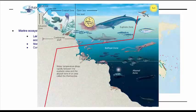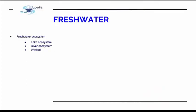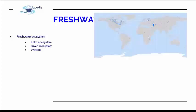Here you can see how temperature changes with depth, along with light availability and so on. Now moving on to freshwater — there are three main types of freshwater ecosystems: lakes, rivers, and wetlands.